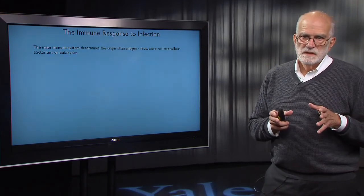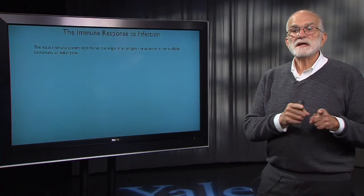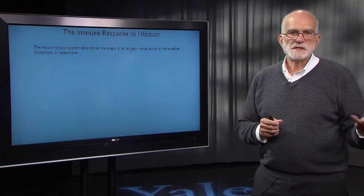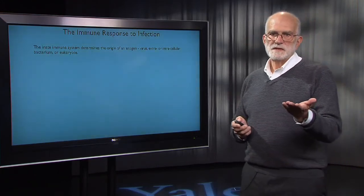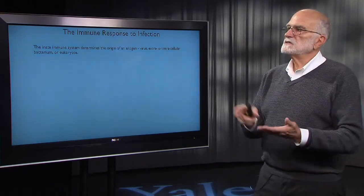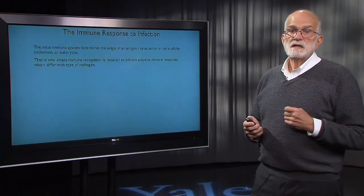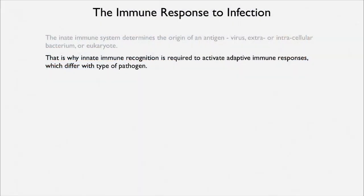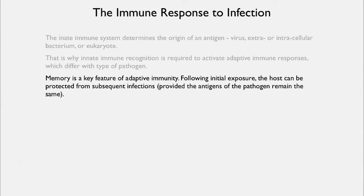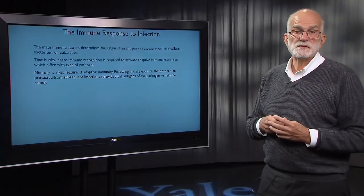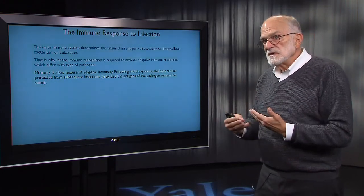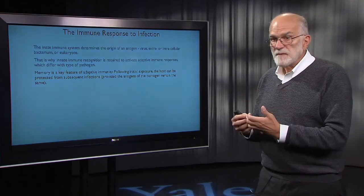The innate immune system is the part of our defense that determines where an antigen came from — did it come from a virus, an extracellular or intracellular bacterium, or a eukaryotic parasite? The innate immune system detects that and tells the adaptive immune system what it's dealing with — that's why innate immune recognition is required to activate the adaptive immune response. A key feature of adaptive immunity is the ability to remember. If a pathogen is encountered in a two- or three-year-old child, a set of B cells is recruited and remembers the reaction to that pathogen, and if it is encountered 50 years later, that population of B cells can be rapidly activated.